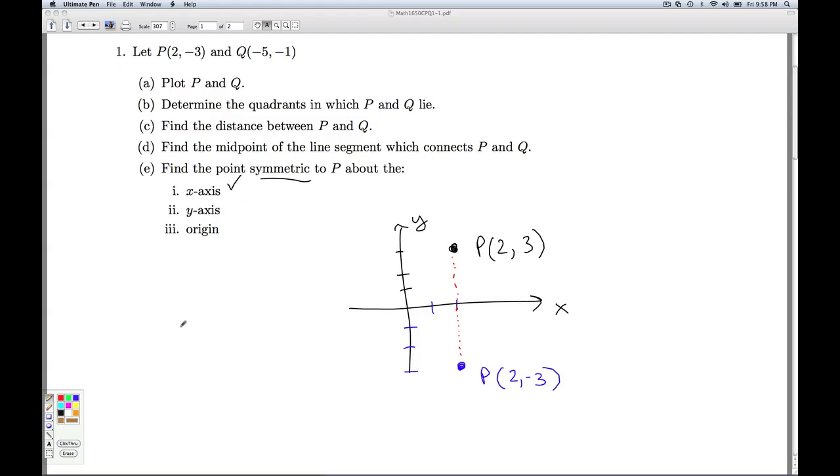Now we want to reflect P across the Y axis. So the point has to be directly opposite P, but over in this direction. Since we traveled 2 units to get to here, we need to go back 2 units. And the point then symmetric about the Y axis would be (-2, -3). And so once again, the reflection of a point across the Y axis, you keep the Y values the same, and you take the opposite of the X value.